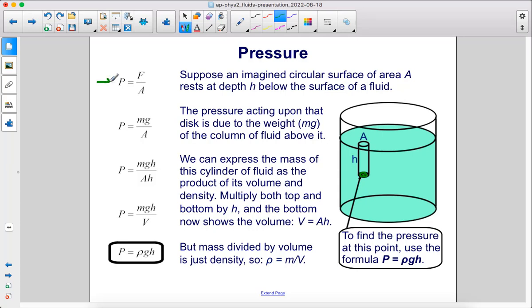What we're doing in this slide is we're going to calculate the pressure at this point in the fluid, at that depth below the surface. We start with our pressure equation. Pressure equals force over area. The pressure acting upon that disk is due to a force, the weight of the column of fluid above it. The weight of that liquid is providing that force. Instead of force, we're going to have mg, where that is the weight of the liquid.